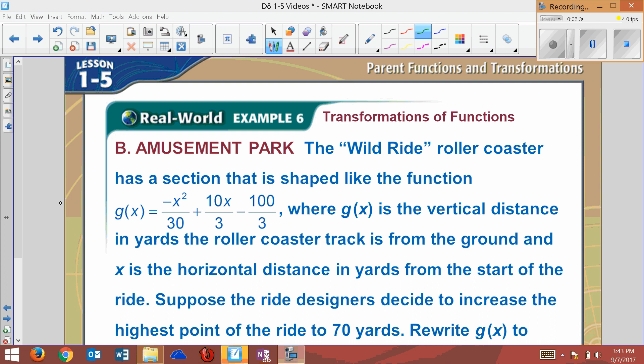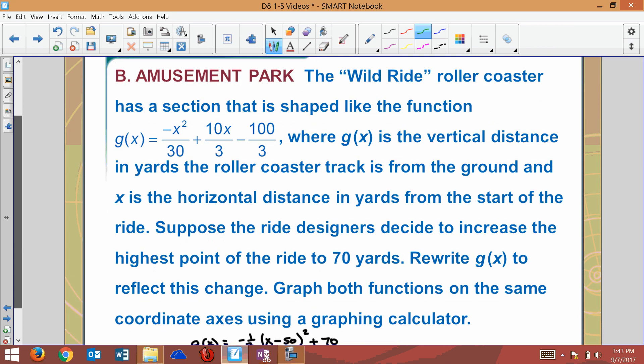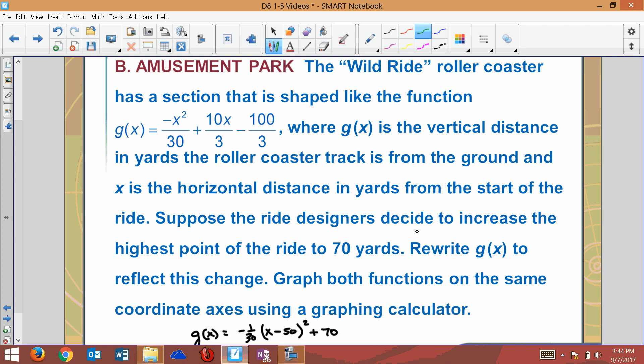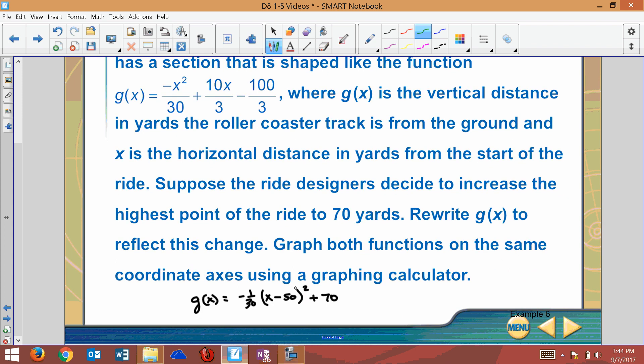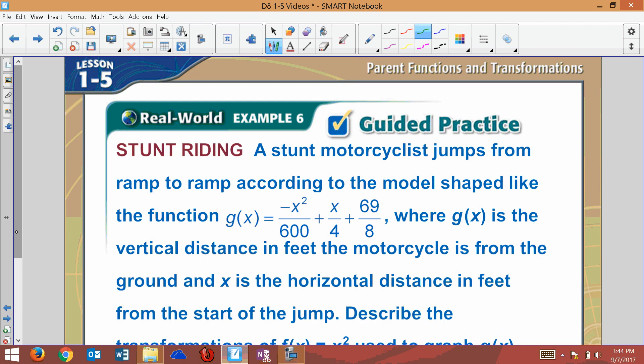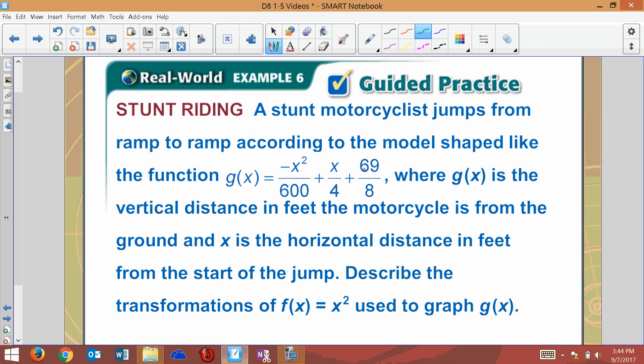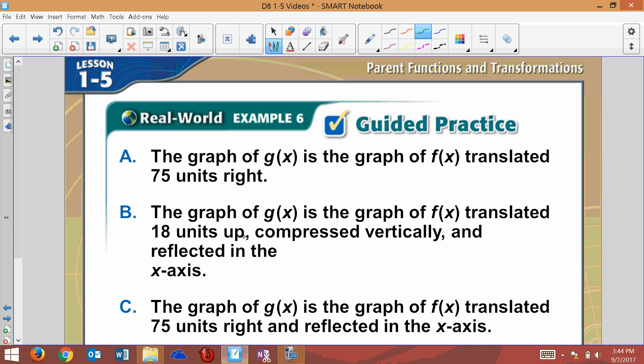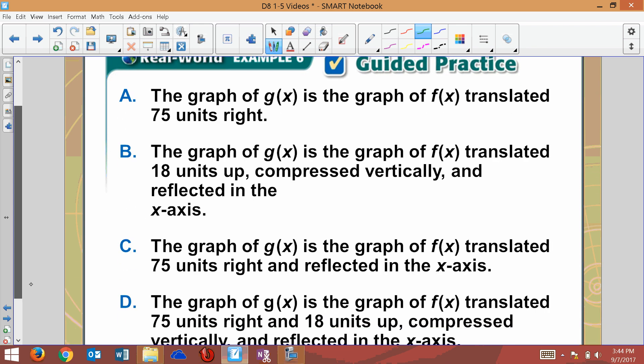We now have the same problem, but down there below it says suppose the ride designers want to increase the highest point to 70 yards. Well, how would you do that? You need the highest point on the outside being plus 70. So what I've done is rather than have to flip back and forth and change the equation, I just wrote it out. Remember how it was before - plus 50. That's the highest point because this is an upside-down parabola. It was 50, we just changed it to a 70. Now I want you to try to work this out here. Try to complete the square and see what you come up with. To give you a hint and some help, you should be able to come up with the transformations that match your answer choices here.